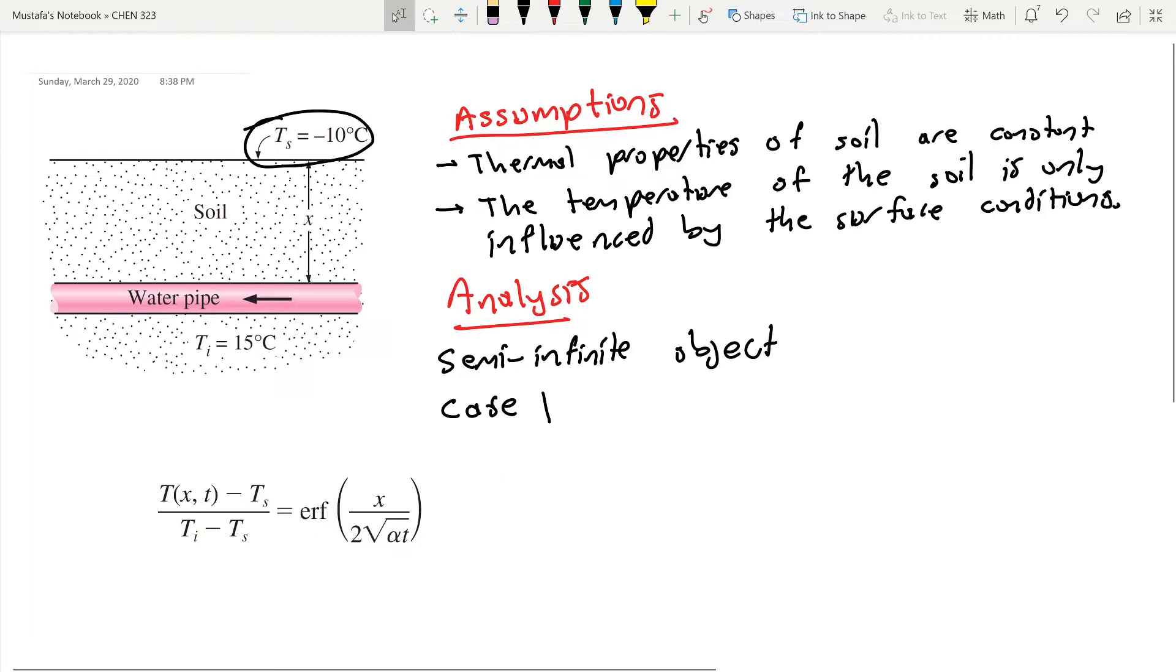So what I'm trying to find here - I'm trying to find the position that is going to allow me to prevent the freezing of water for three months. So the time scale T is three months. X is unknown, and I would like this temperature, the temperature of the water, to be greater than or equal to zero.